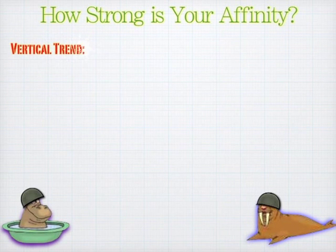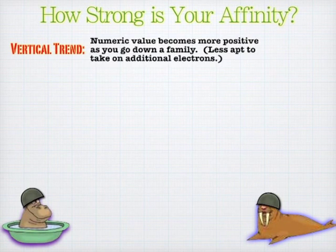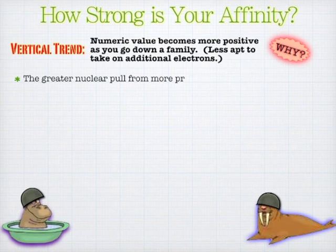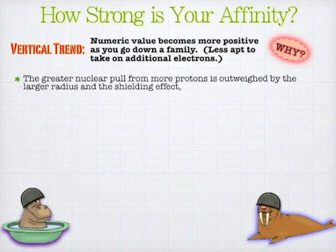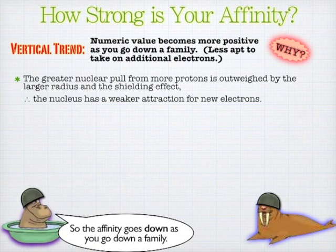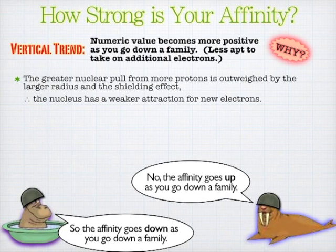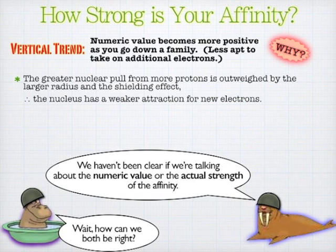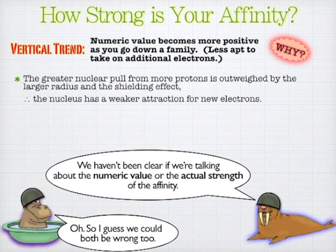The vertical trend is: as the radius gets bigger, it's tougher to get a hold on electrons, so you'd imagine it has less affinity for new electrons. This means the numeric value actually increases and becomes closer to zero, because when it gains electrons it gives off less and less energy until it's not giving off energy at all. So you have to be careful about how you define it — if it's the numeric value, as you go down a family it becomes more positive because it's giving less energy away. But the overall affinity for electrons also goes down as you go down a family.